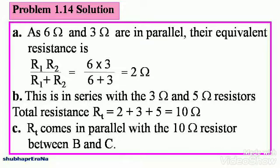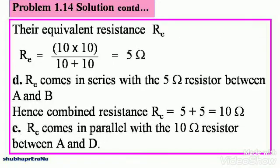Now Rt comes in parallel with the 10 ohm resistor between B and C. Look at points B and C. Their equivalent resistance Re equals 10×10 divided by 10+10, which gives you 5 ohms.